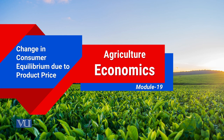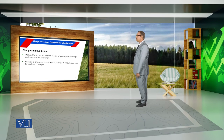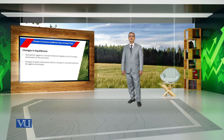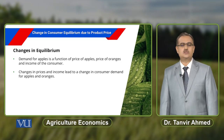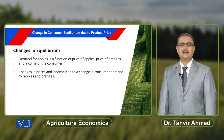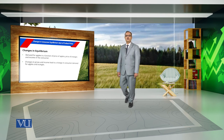Module 19: Change in Consumer Equilibrium due to Product Price. Consumers' optimal choice of commodities changes whenever there is a change in prices of the commodities. In our example, where a consumer is using apples and oranges to get satisfaction, if there is a change in prices of apples or oranges or the income of the consumer, there is a change in the consumer's equilibrium and optimal choice where the consumer is maximizing his satisfaction.